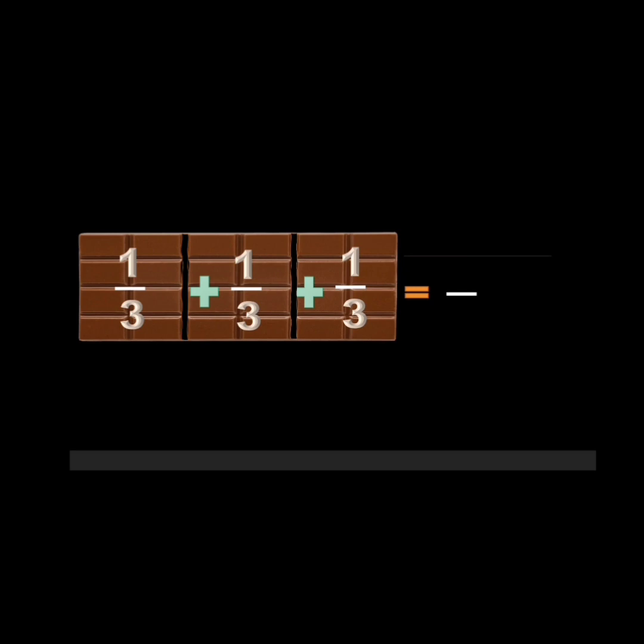Let us take another example. Here the total chocolate bar is split into three equal parts. When we split the total chocolate bar into three equal parts, each part is one third. When we find the sum, the denominator is the same — 3 — because the total chocolate bar is divided into three parts, and the sum is 3 upon 3, which equals one whole.